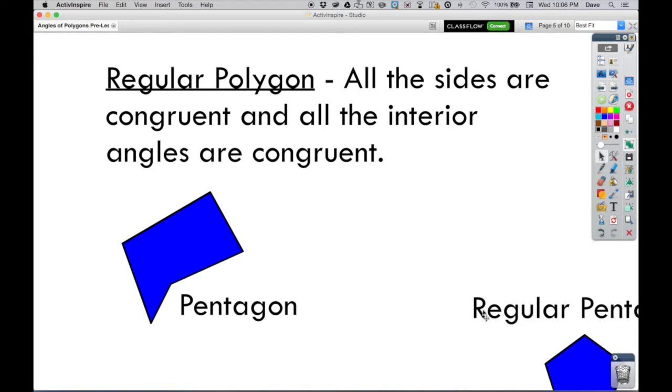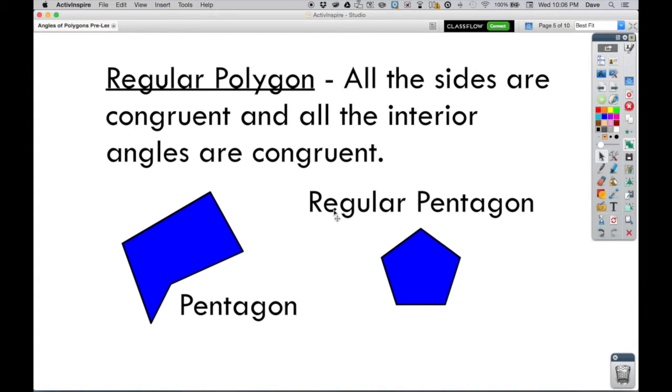Now a regular pentagon looks like this, and it's a regular pentagon because it meets these criteria: all the sides are congruent and these interior angles are also all congruent. So that's what makes it a regular shape as opposed to just a plain old pentagon.